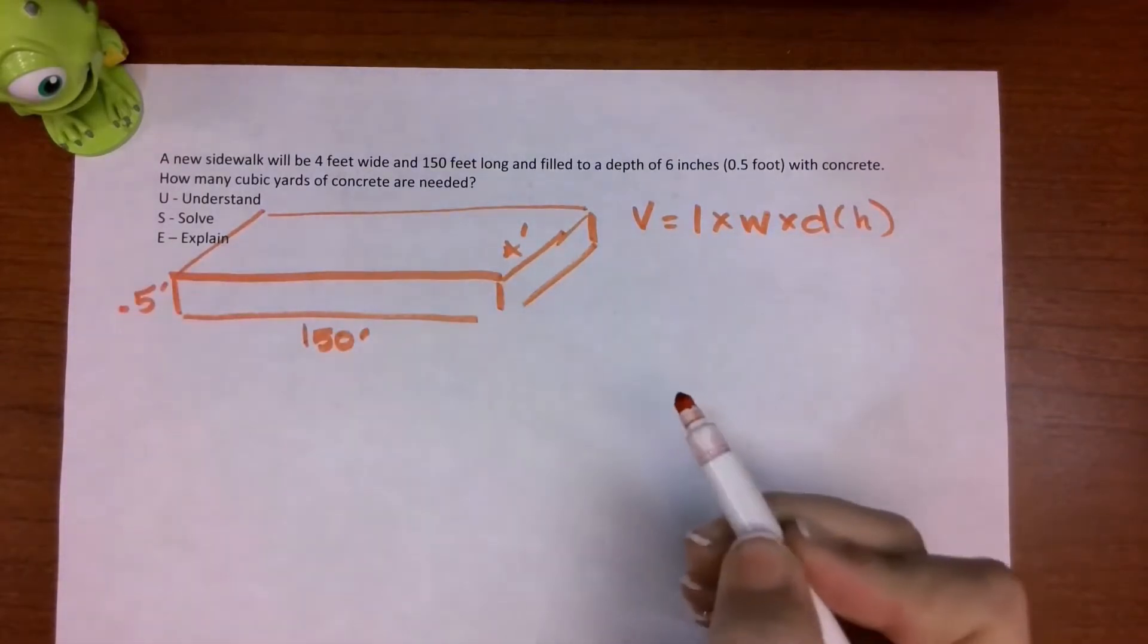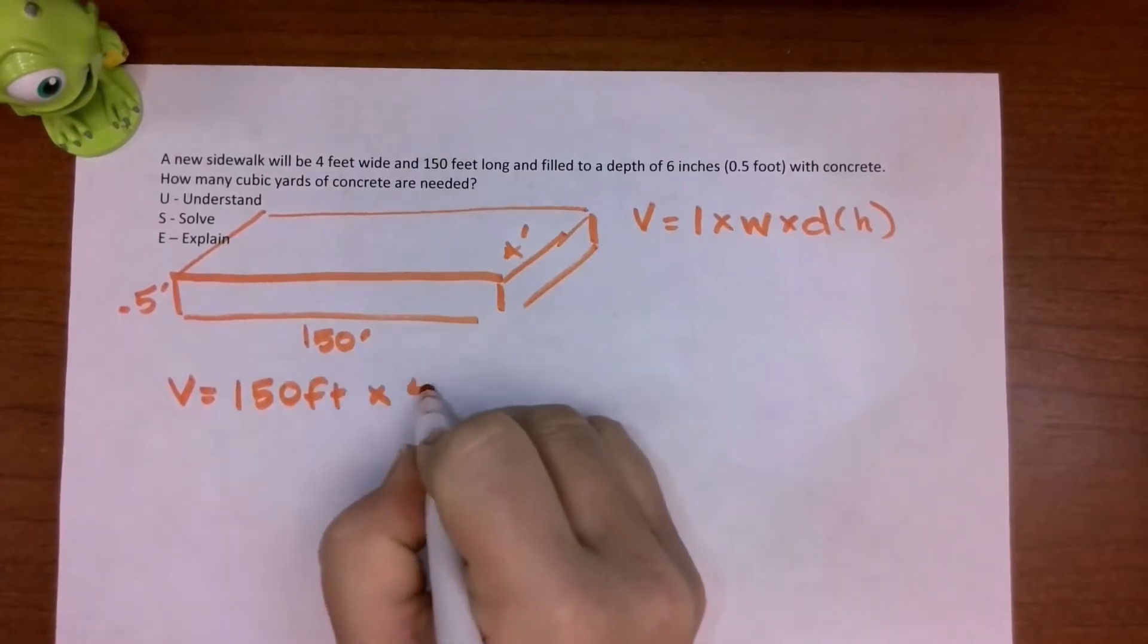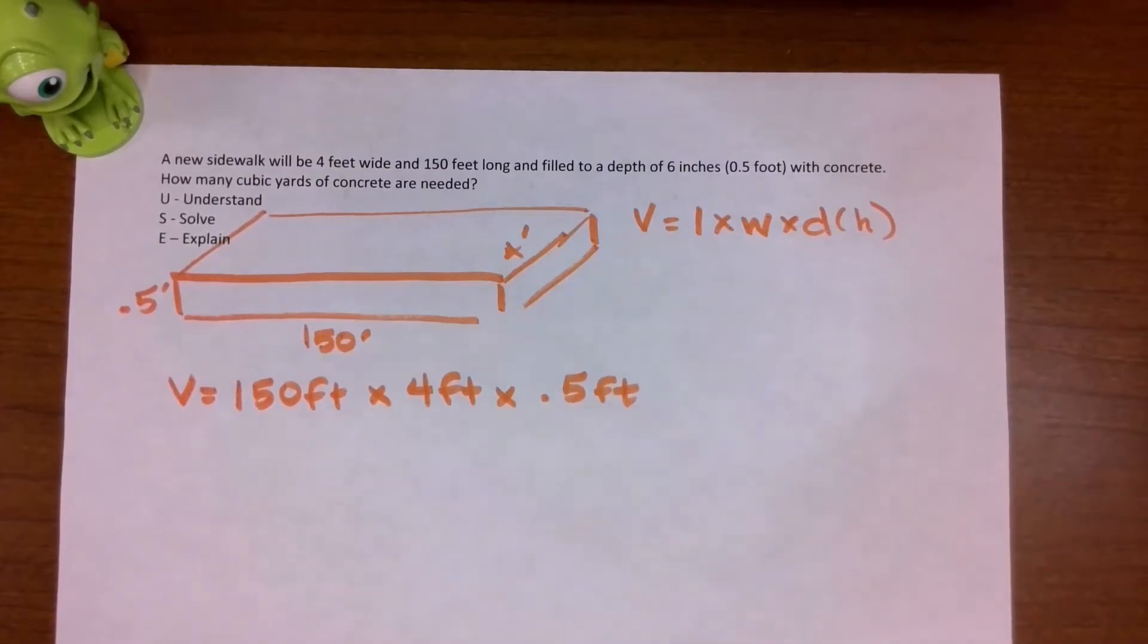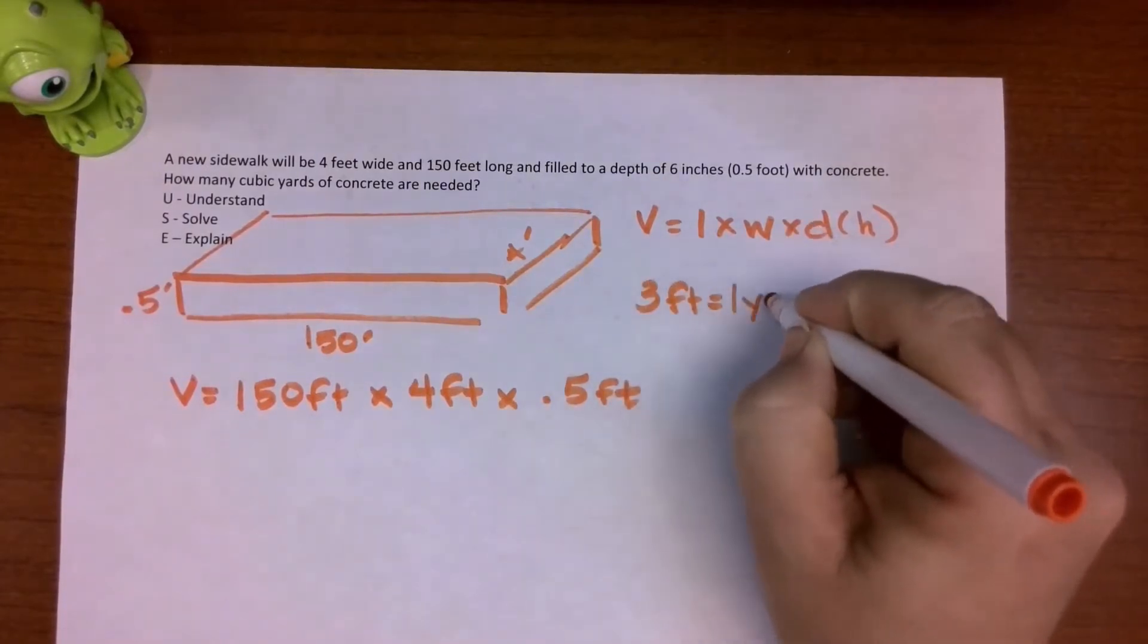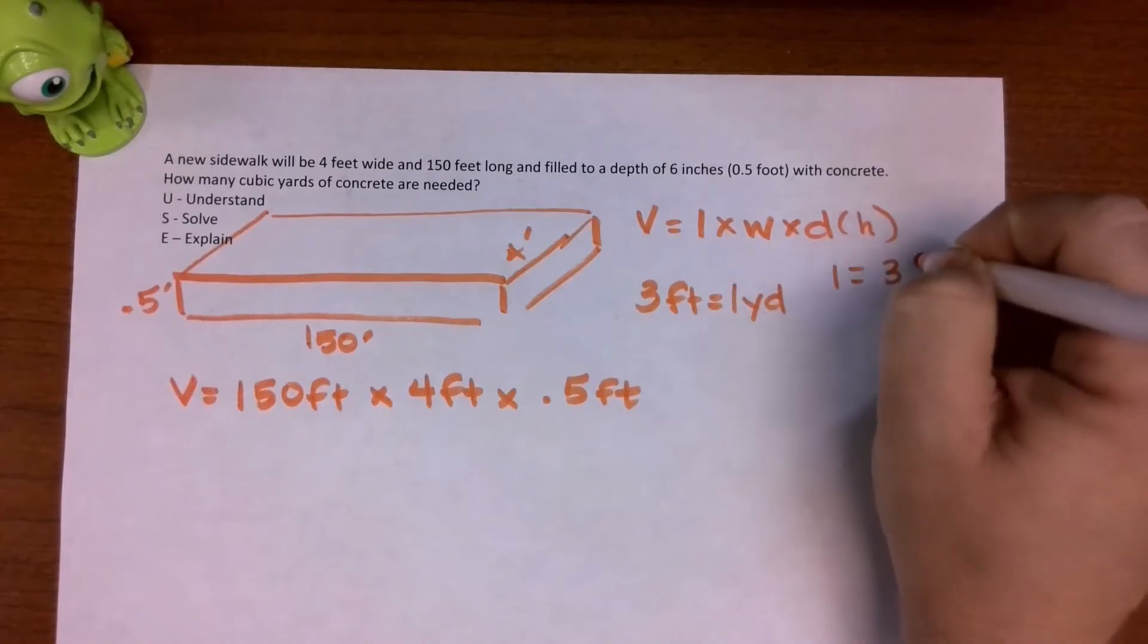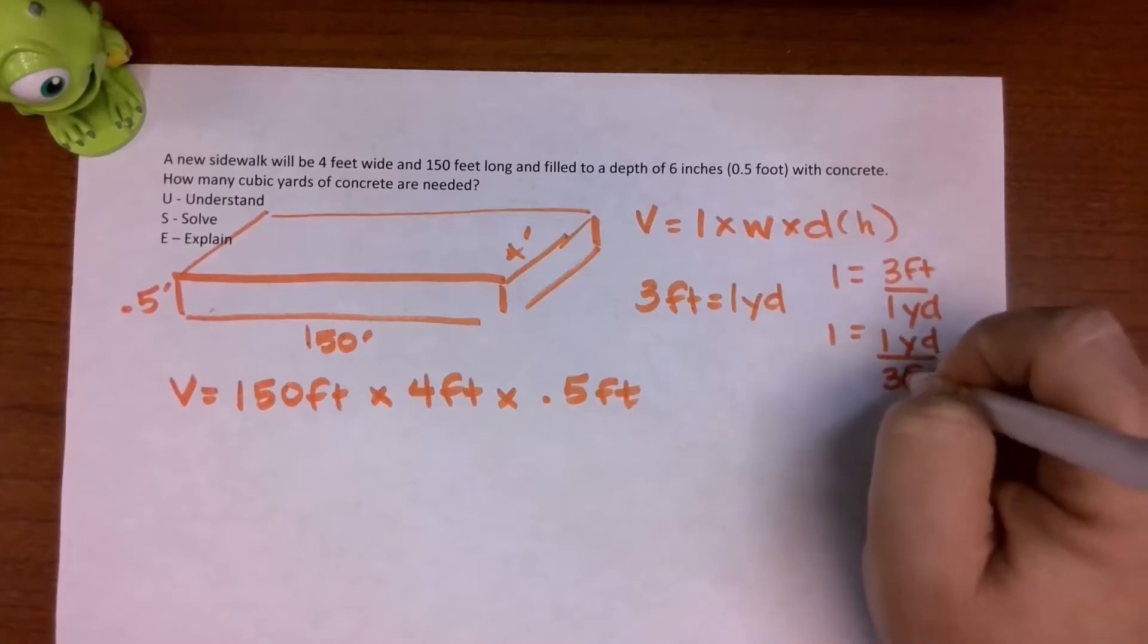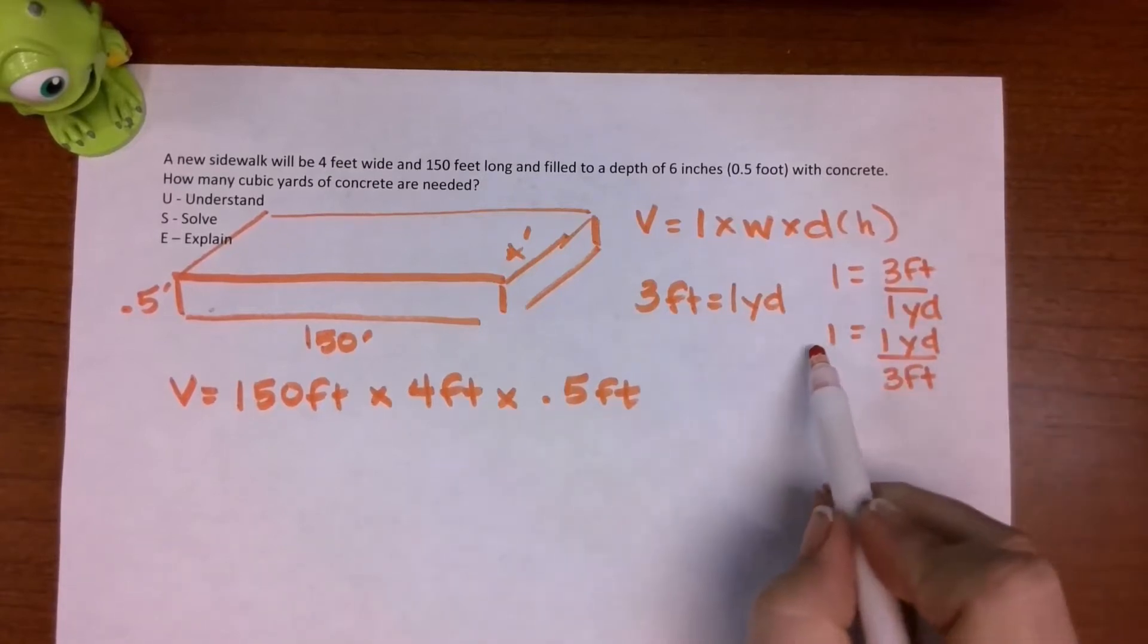I'm going to go ahead and set my formula up. So I've got 150 feet times 4 feet times 0.5 feet. And now I need to change each one of these feet to yards. Remember, we have 3 feet equals 1 yard is our conversion factor. So we can write that either as 1 is equal to 3 feet over 1 yard, or 1 is equal to 1 yard over 3 feet, depending on whether we need feet in the numerator or the denominator. In this case, we need it in the denominator. So we're going to use that one.